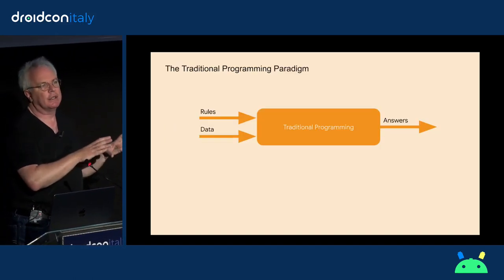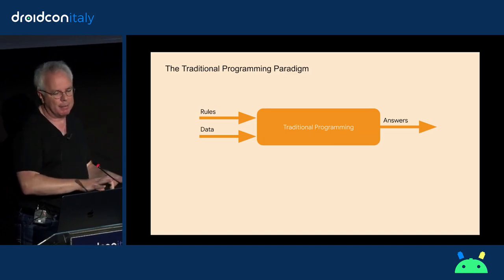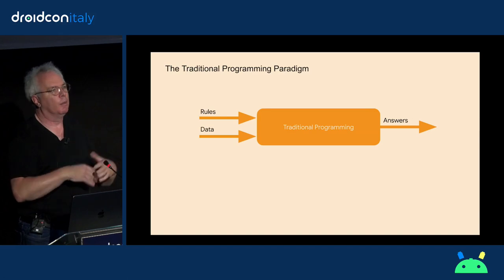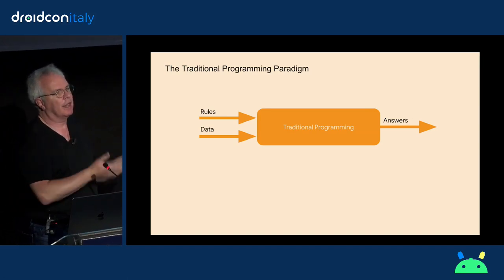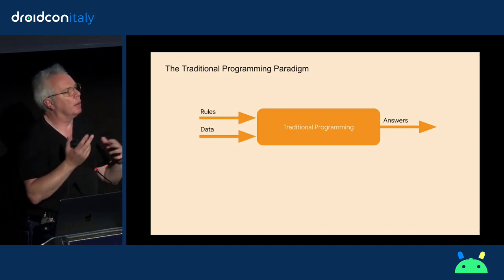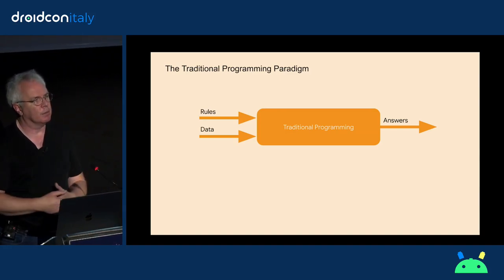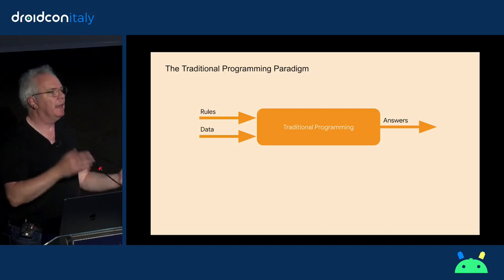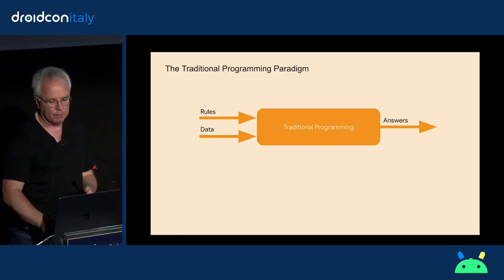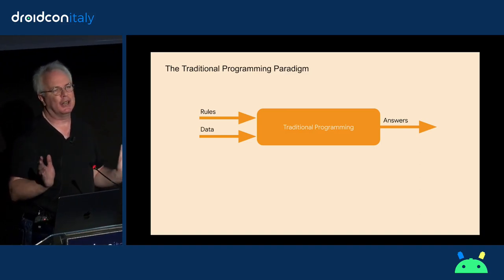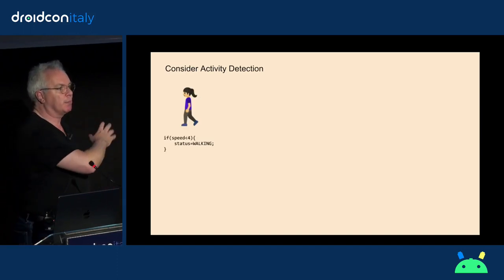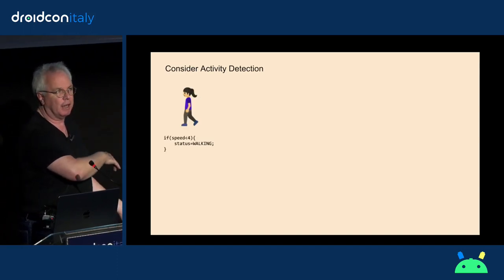The traditional programming paradigm is: we have rules, we express them in a programming language, they act on data, and they generate answers. All the AI and machine learning revolution is, is a remix of this diagram — where instead of us expressing the rules ourselves, we have a computer figure them out.